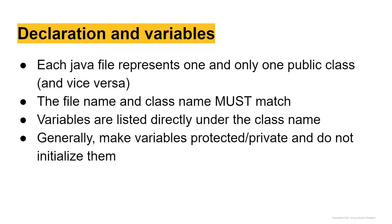Variables are listed directly under the class name. Generally, it's a good idea to make your variables either protected or private as opposed to public, for simple security reasons and to avoid confusions in your code. It's not great practice to have your class variables freely accessed and edited by other classes. You want to make sure that your class works the way you want it to and can't be manipulated by other classes.